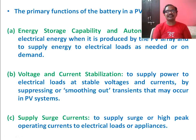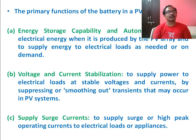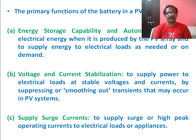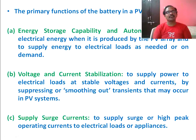The primary functions of a battery in a PV system are three. The first one is energy storage capability and autonomy. Energy storage capability means the battery stores energy generated by the solar PV array. Autonomy means, when designing a PV system, you need to consider the number of days of autonomy — for example, due to cloudy weather or the rainy season, you won't have solar energy.